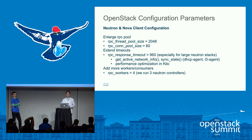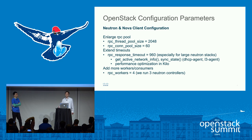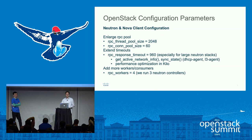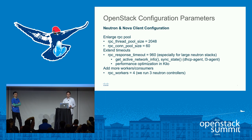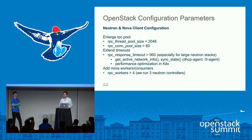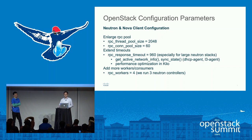The first thing we jumped into was the client-side configuration around Rabbit, particularly around Nova and Neutron client configurations. There are a lot of things we had to do specifically around enlarging the RPC pool — increasing the thread pool size, the connection pool size, and also extending the timeouts. The default RPC response timeouts are around 60 seconds, but with really large Neutron stacks it's not nearly enough, because it needs to pool all of the networks, subnets, ports, and bindings. Some calls from the DHCP agent and L3 agent can take much longer than 60 seconds, so we extended this to 960 seconds.